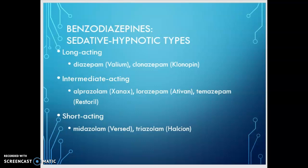Our long-acting benzodiazepines are diazepam, or Valium, and clonazepam — clonazepam being the longest, also called Klonopin. Our intermediate-acting are alprazolam, or Xanax, lorazepam, that's Ativan, and temazepam, that's Restoril. Temazepam is typically reserved for use as a hypnotic. Short-acting are midazolam, that's Versed, and triazolam, Halcion. Those short-acting ones you're going to see used only in the clinical setting — they are not going to be used in a prescription the patient takes home.